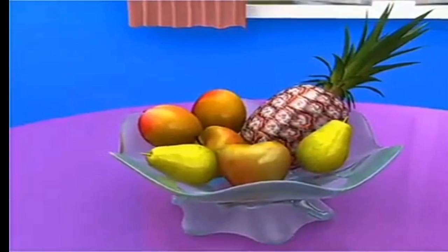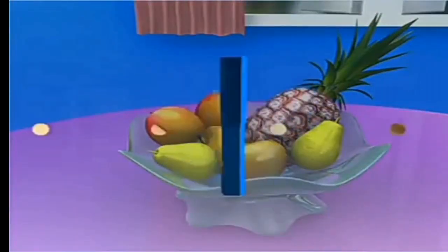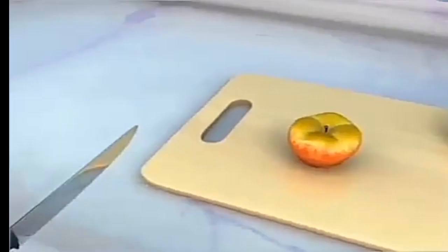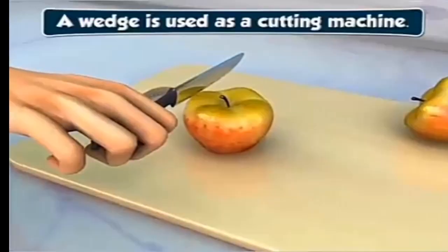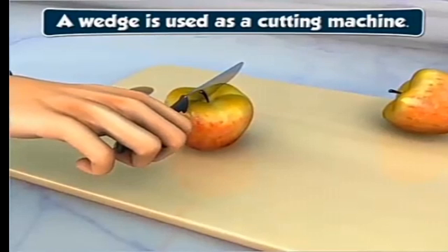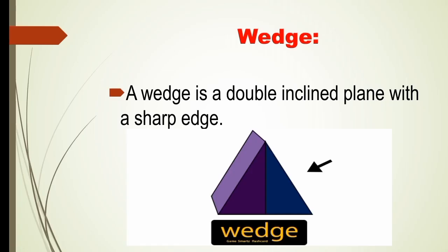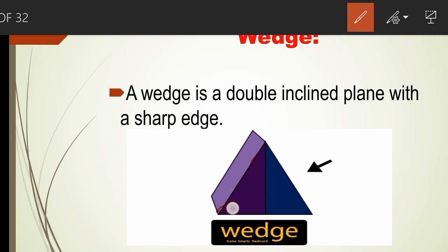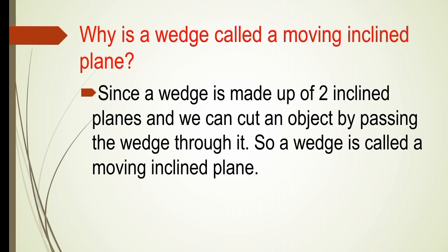We usually cut fruits and vegetables, but how do we cut them? Simply by using a knife. A knife is an example of a wedge, which is a simple machine. A wedge is used as a cutting machine. A wedge is a double inclined plane with a sharp edge. As you can see in the diagram, there are two inclined planes joined together to form a sharp edge. Unlike an inclined plane which is kept fixed, a wedge cuts objects when we move it through the object. So a wedge is called a moving inclined plane.